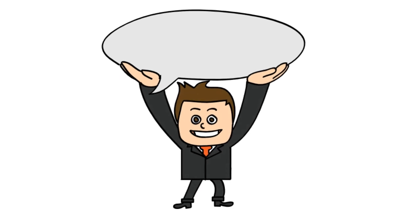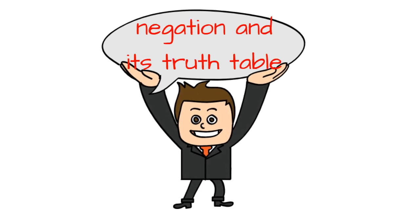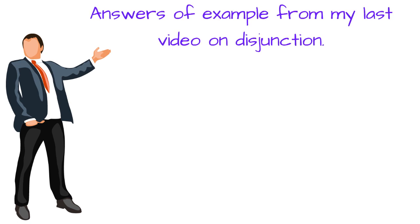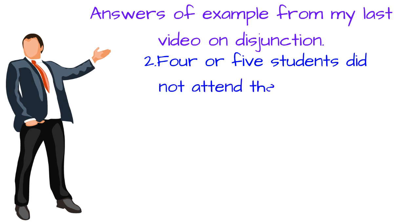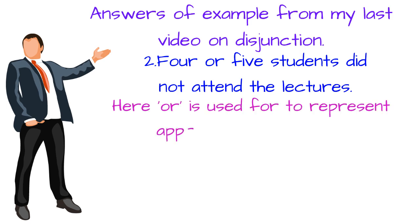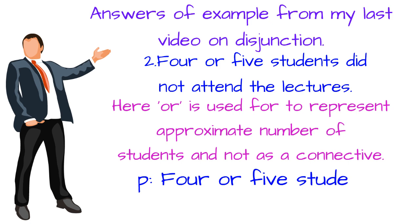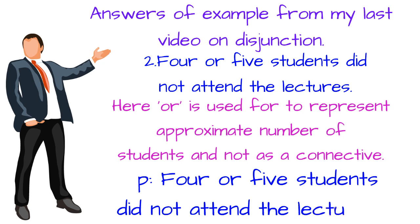In this way we have seen negation and its truth table. Now we shall see the answer to the example from my last video on disjunction. '2, 4 or 5 students did not attend the lectures.' Here 'or' is used to represent an approximate number of students and not as a connective. Therefore it is a simple statement, expressed as: we denote '4 or 5 students did not attend the lectures.'